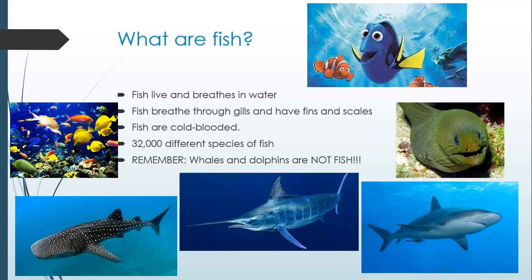Fish breathe through gills, and they have fins and scales. Fish are cold-blooded, so they tend to swim to warmer waters when they need to warm up, and colder waters when they need to cool down. There are 32,000 different species of fish — they can be really big fish like a shark or even a whale shark, they can be eels, salmon, trout, cod, or any type of fish. But remember that whales and dolphins, even though they live and breathe in water, they are not fish.